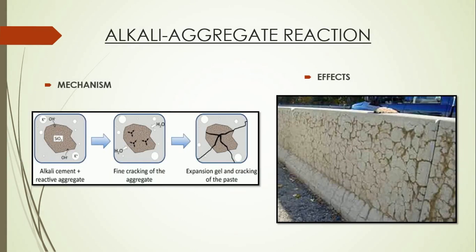Fourth: alkali aggregate reaction. In this reaction, the alkali elements present in the cement react with the siliceous material present in the aggregates to form a gel-like substance. This gel-like substance further expands, causing cracking in the concrete, and hence this type of pattern is formed on the concrete structures.